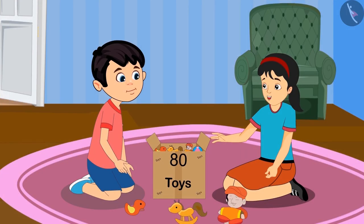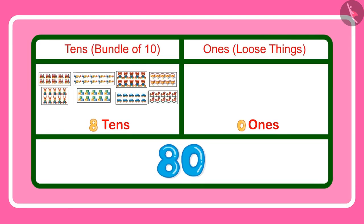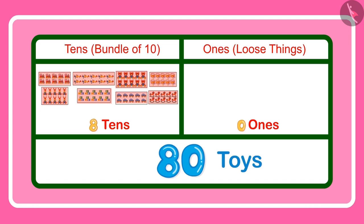No Chotu, here 8 is at the tens place. And this means 8 groups of 10 toys each. So it comes to 10, 20, 30, 40, 50, 60, 70 and 80 toys. And 0 is at the ones place.